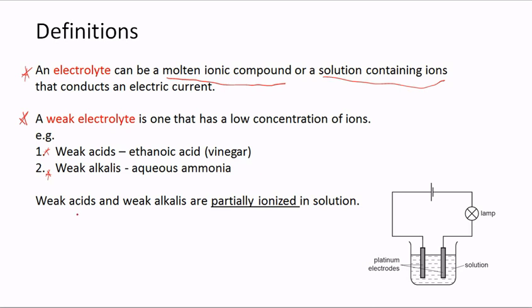Weak acids and weak alkalis are partially ionized in solution. Whenever you are asked to explain what is meant by the term 'weak' or 'strong', it has to do with the degree of ionization. If something is partially ionized in solution, meaning we have a low concentration of ions present, then it is classified as weak.